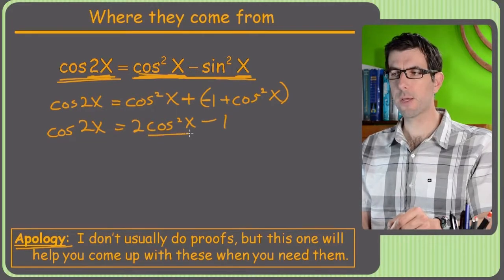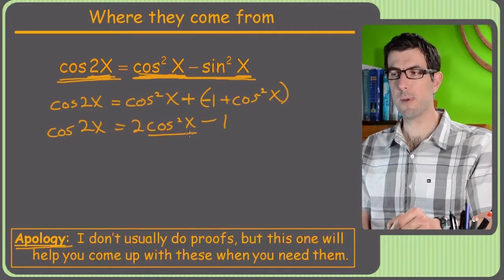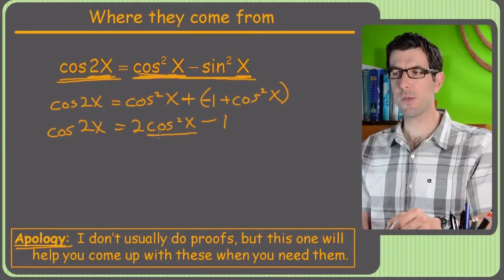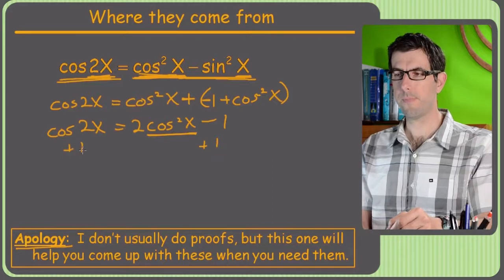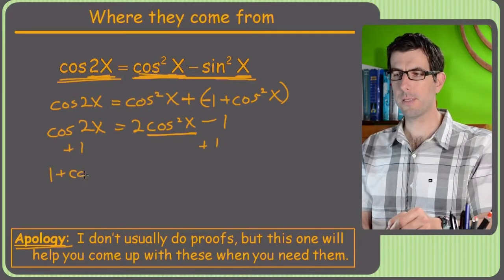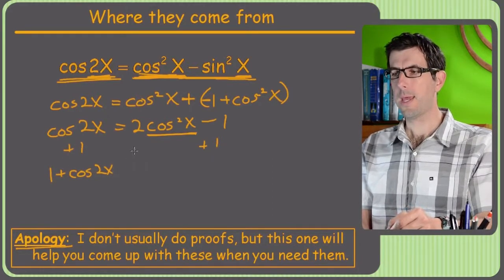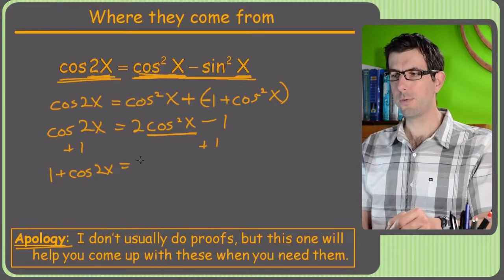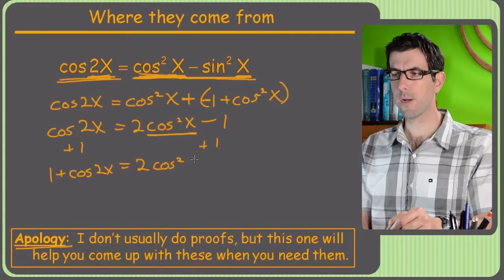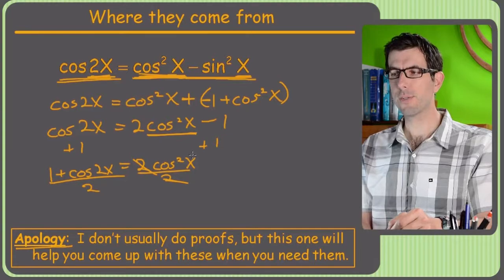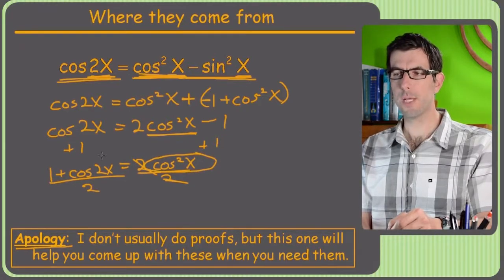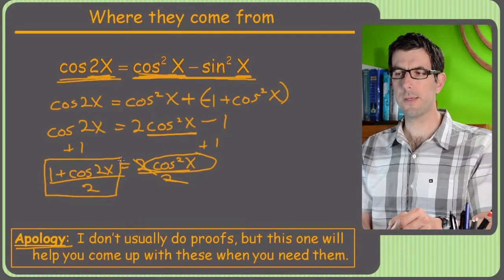All right, so at this point we've got a cosine squared on one side, in one spot, and cosine 2x on the other. So we're just going to solve for this cosine squared. So we'll add 1 to both sides. So we'll get 1 plus cosine 2x equals 2 cosine squared x. And then to get rid of this 2, we'll just divide both sides by 2. So that cancels that and divide by 2. So here's that formula we had on the other side. Cosine squared x equals this thing.